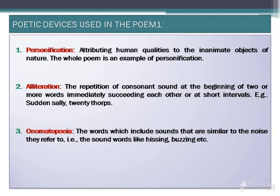The third poetic device used in the poem is onomatopoeia. Onomatopoeia means sound words — words that include sounds similar to the noise they refer to. For example, 'hissing' and 'buzzing' are onomatopoeias. These are the first three poetic devices used in the poem, and all of you are familiar with them.